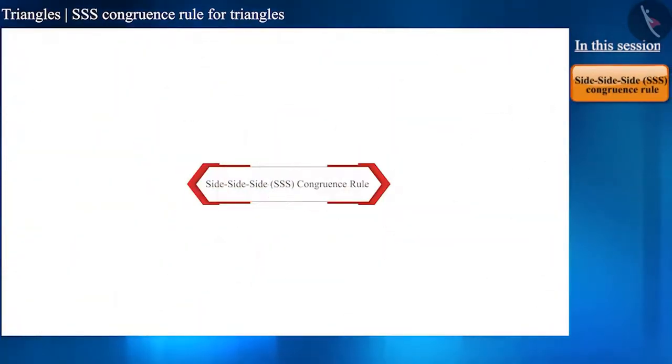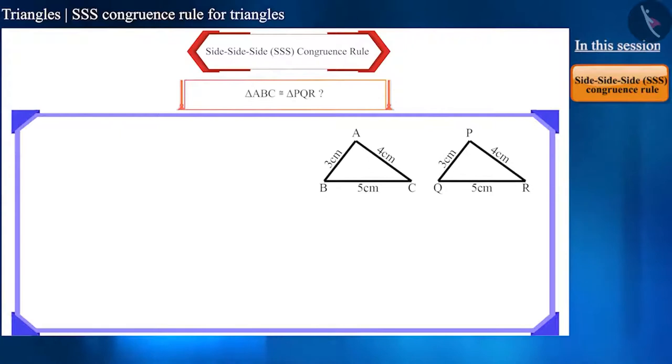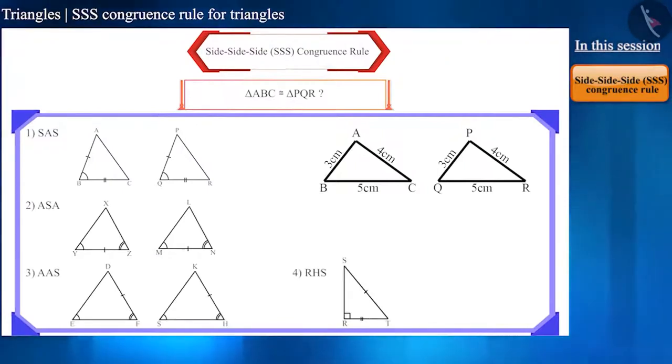Friends, the name itself suggests that this rule of congruence is related to the sides of triangles. Look at the given triangles. Are these triangles congruent? Friends, the rules of congruence that we learned so far, such as SAS, ASA, AAS and RHS have at least one angle in them.